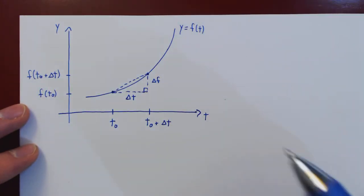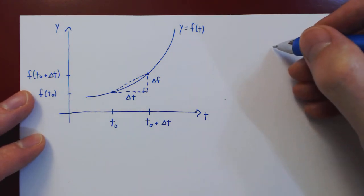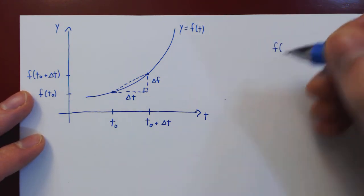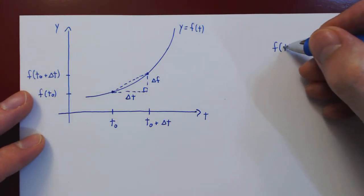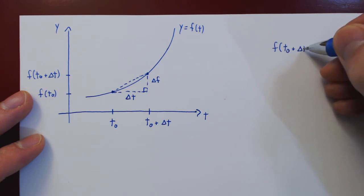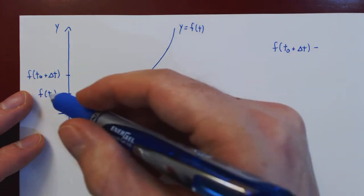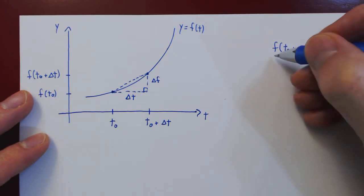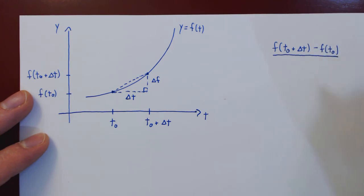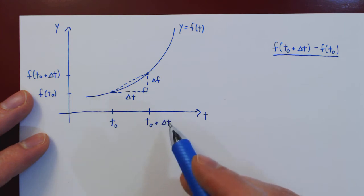And so we can now find the average velocity of the object over the given time interval. This will be the change in f, f of t0 plus delta t minus f of t0, divided by the change in t. But if you notice, the change in t will be the larger value of time minus t0, but t0 plus delta t minus t0 leaves us with delta t.